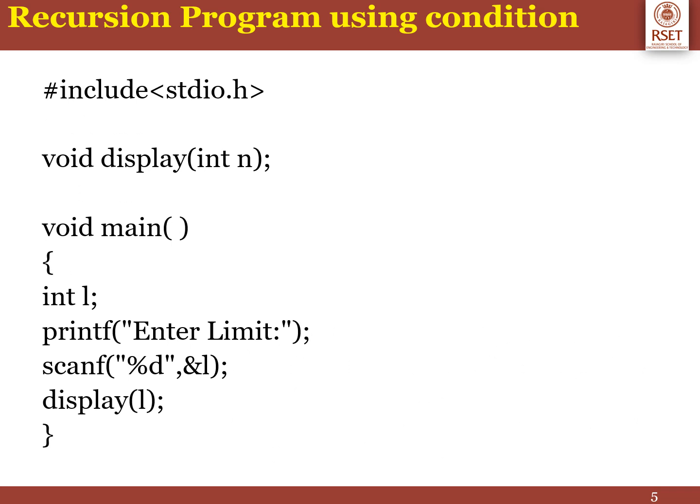In the second example, that is recursion using a condition, we have used the same display function. The first part is the function declaration part, and we have a parameter here — integer n. Inside the main function, we have declared a variable l to enter the limit, or how many times the function should be repeated. So we have a limit here using the variable l. After that, we have called the display function with display(l).